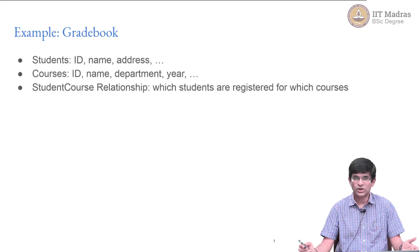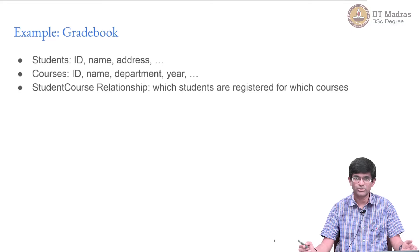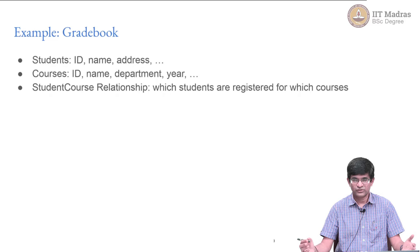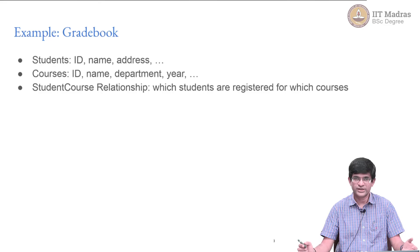Students could also have additional information, maybe their address, or if they are staying in a hostel, the hostel name and room number. In addition to this, another piece of data in the gradebook is a set of courses — a list of courses.